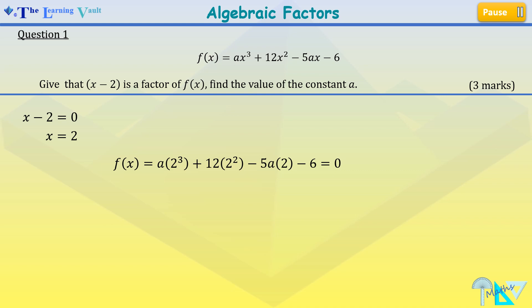So we substitute our value of x into the function, we now simplify, and we simplify further, we have minus 2a plus 42 equals to 0. So therefore our a equals to 21.